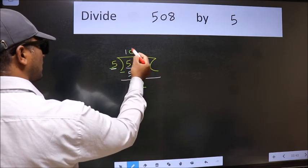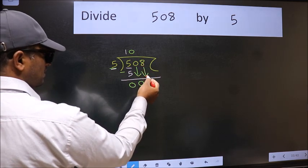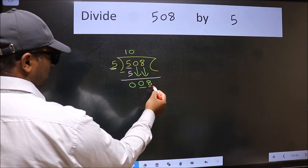And the rule to bring down the second number is we should put 0 here. Then only we can bring this number down. Now 8.